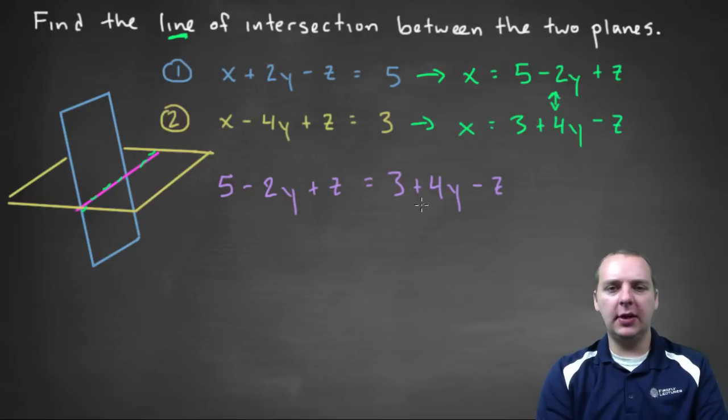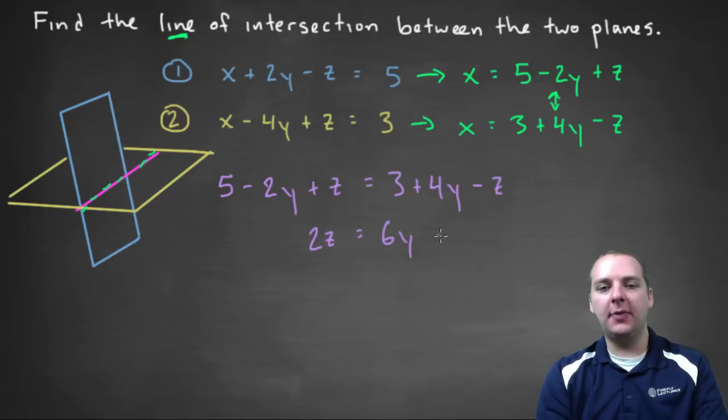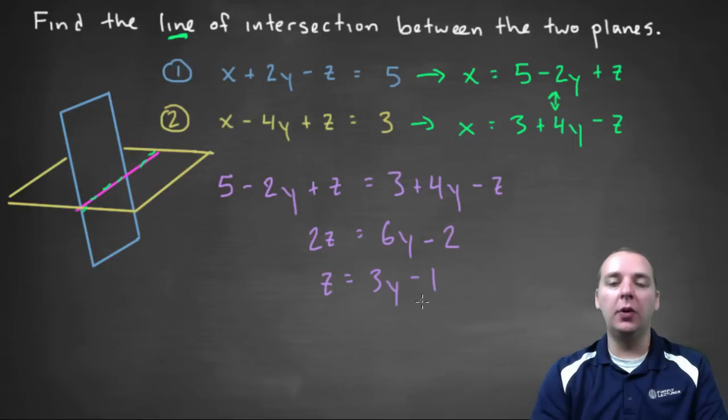And let's try to maybe shuffle some terms around, let's maybe try to solve for z. So if we add z to the left, we get two z. If we add two y to the right, we'll get six y, four y, and two y, make six y. And then three minus five is negative two, so it's looking good.